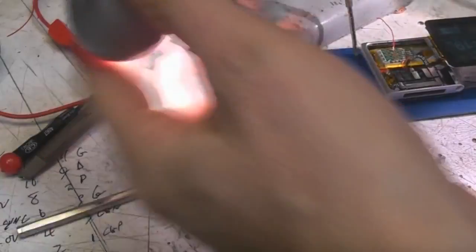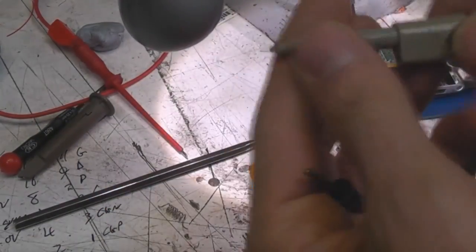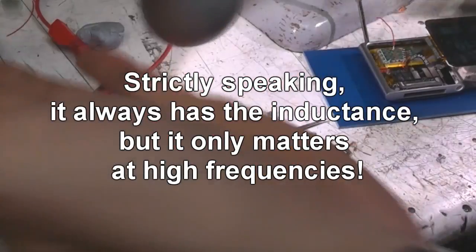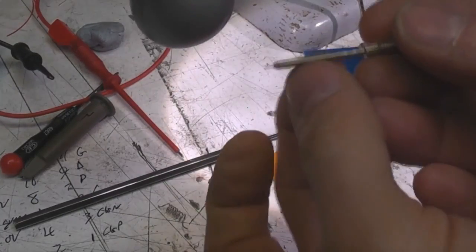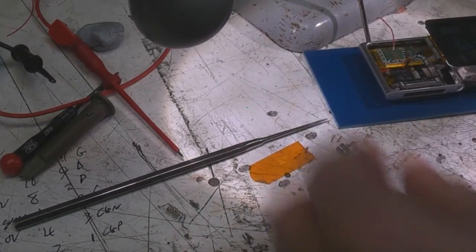Now the problem there is at high frequencies this ground lead has quite significant inductance. So the trick when you're probing is to just throw away the ground lead and what you need to do is: almost any scope or even cheap ones will have some accessible metal near the tip and you need to get a ground as close as possible to that tip.